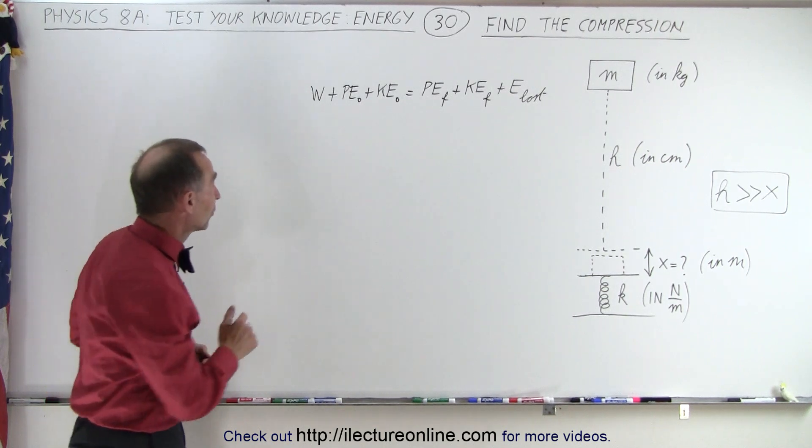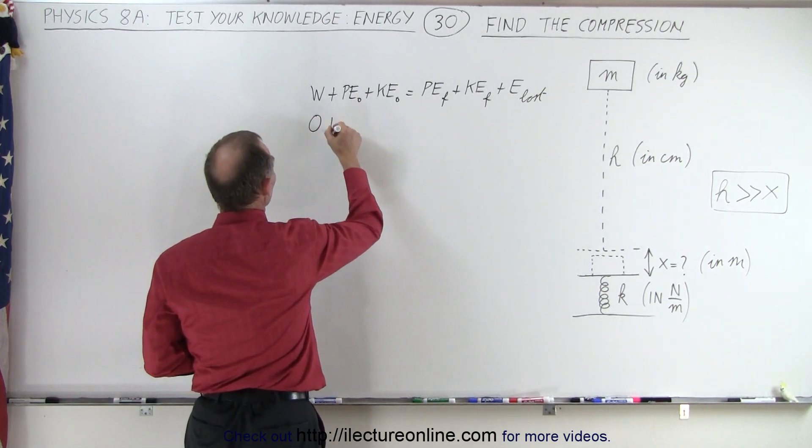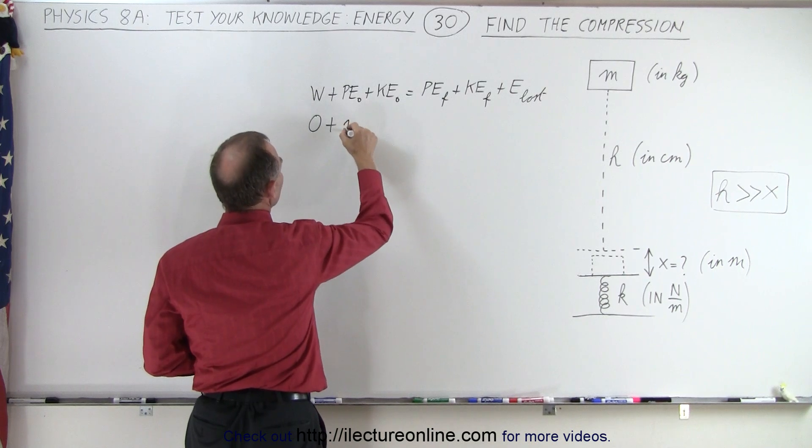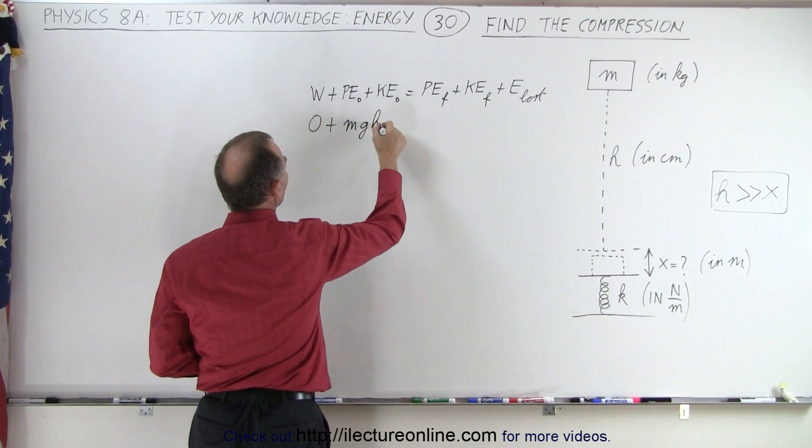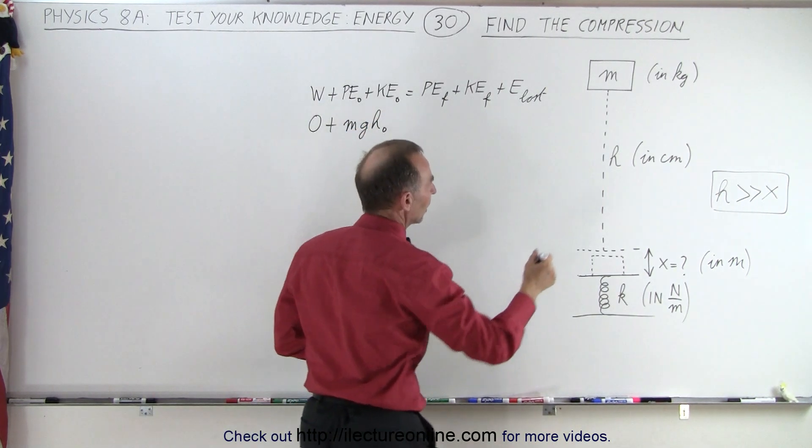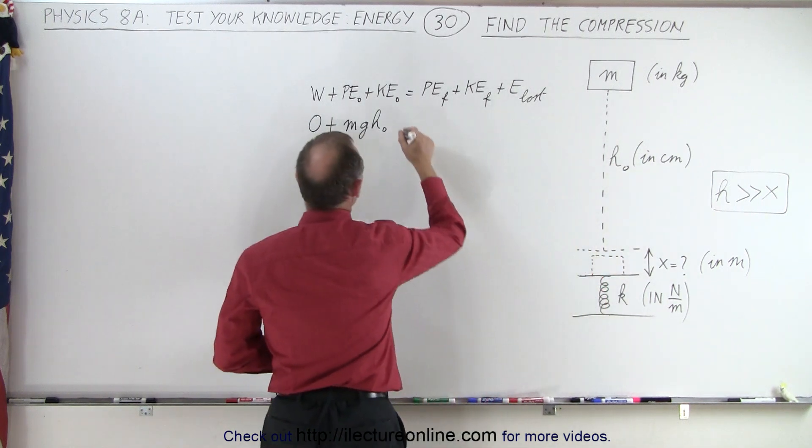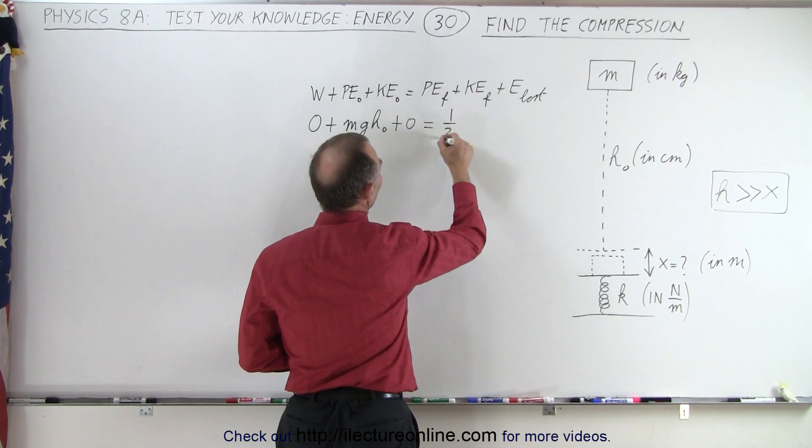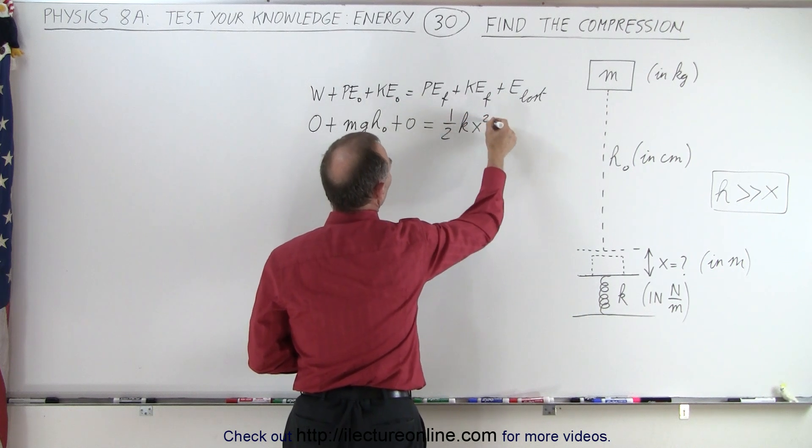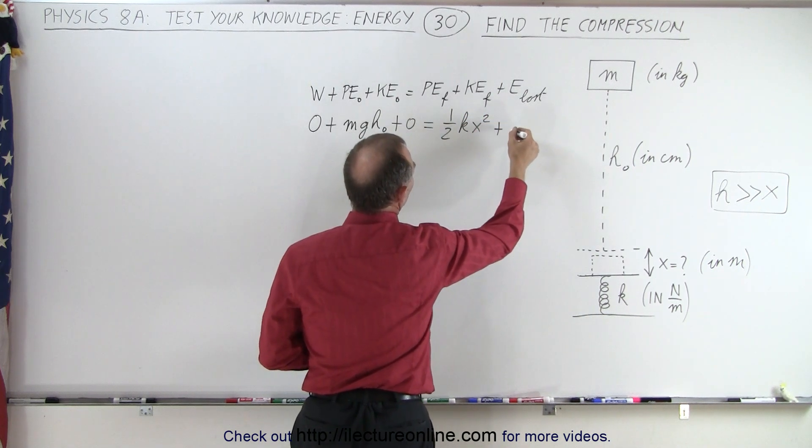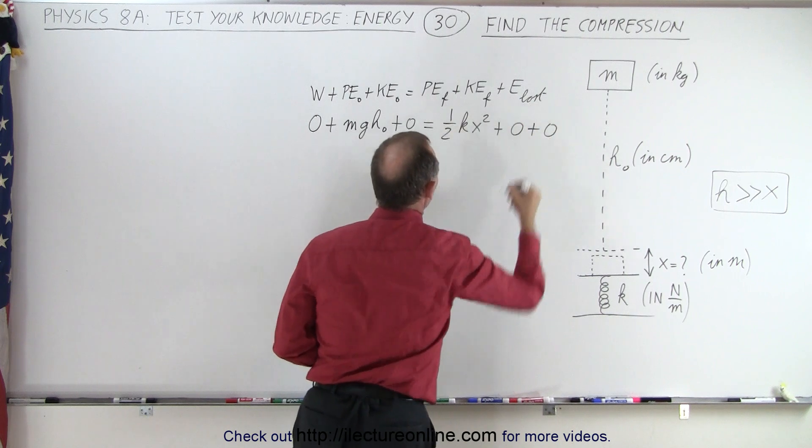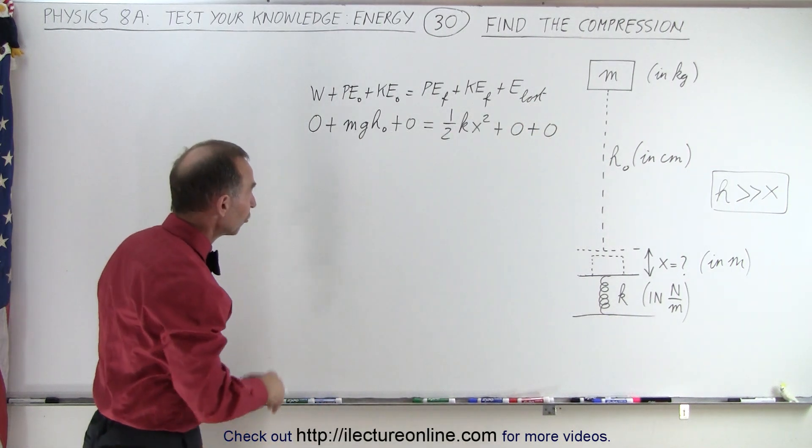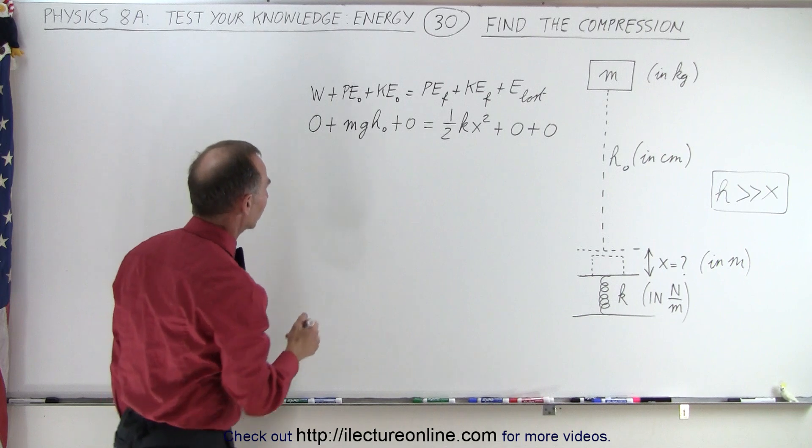So let's see what happens. Zero work put into the system, plus the original potential energy would be mgh initial, so let's call this h initial, plus zero for kinetic energy. Potential energy will be one-half kx squared, plus kinetic energy final, which is zero, plus zero energy lost. It seems simple enough, so let's solve this equation for x.